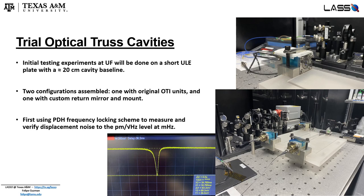This system is mode matching limited, but we have also created a secondary system where we have an adapted return mirror using a Thorlabs Polaris mount mounted to the ULE plate. This allows us to adapt the radius of curvature of that return mirror such that we can bring the visibility of this fundamental mode back up to around 80%.